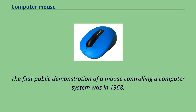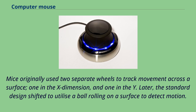The first public demonstration of a mouse controlling a computer system was in 1968. Mice originally used two separate wheels to track movement across a surface, one in the X dimension and one in the Y. Later, the standard design shifted to utilize a ball rolling on a surface to detect motion.